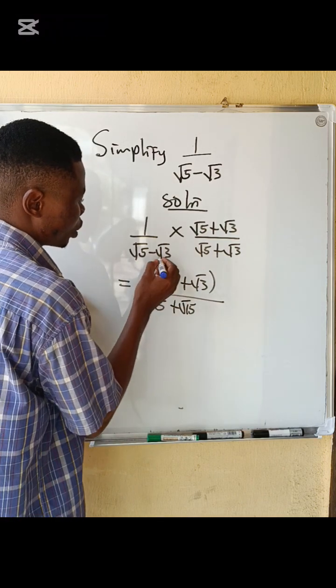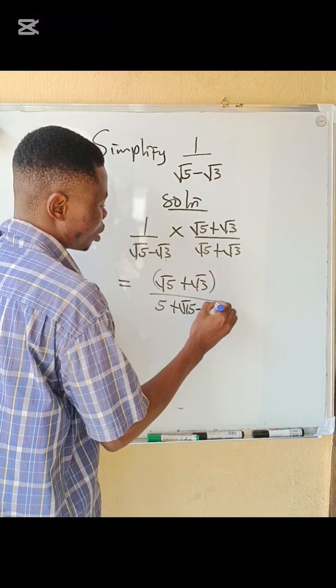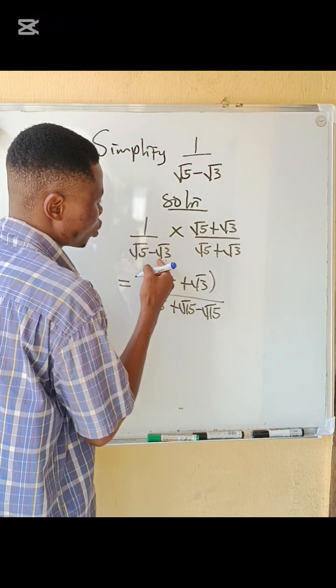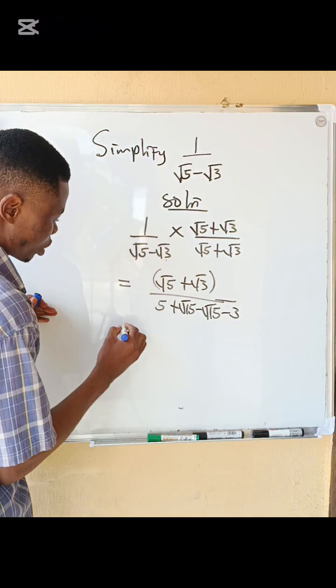Minus root 3 times plus root 3 gives you minus 3. So you have root 5 plus root 3 in the numerator, and the denominator becomes 5 minus 3.